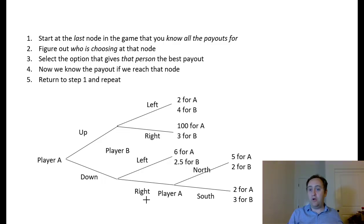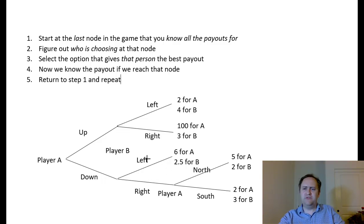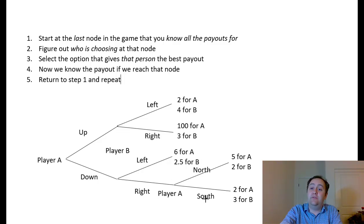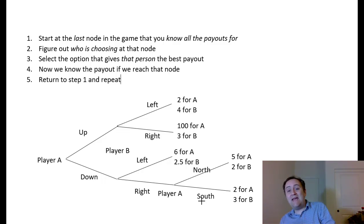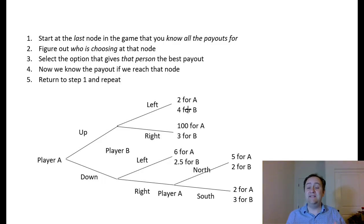Player B could say: if you go up, I'm going to go left, but if you go down, I'm going to go right — that's perfectly valid. We also have a third decision: if player A goes down and then player B goes right, then player A has another decision to make — they can either go north or south. If we follow the tree along all these decisions, we get to the end which has the payout. For example, if player A goes up and player B goes left, then player A gets two points and player B gets four points, and they're always interested in maximizing their points.